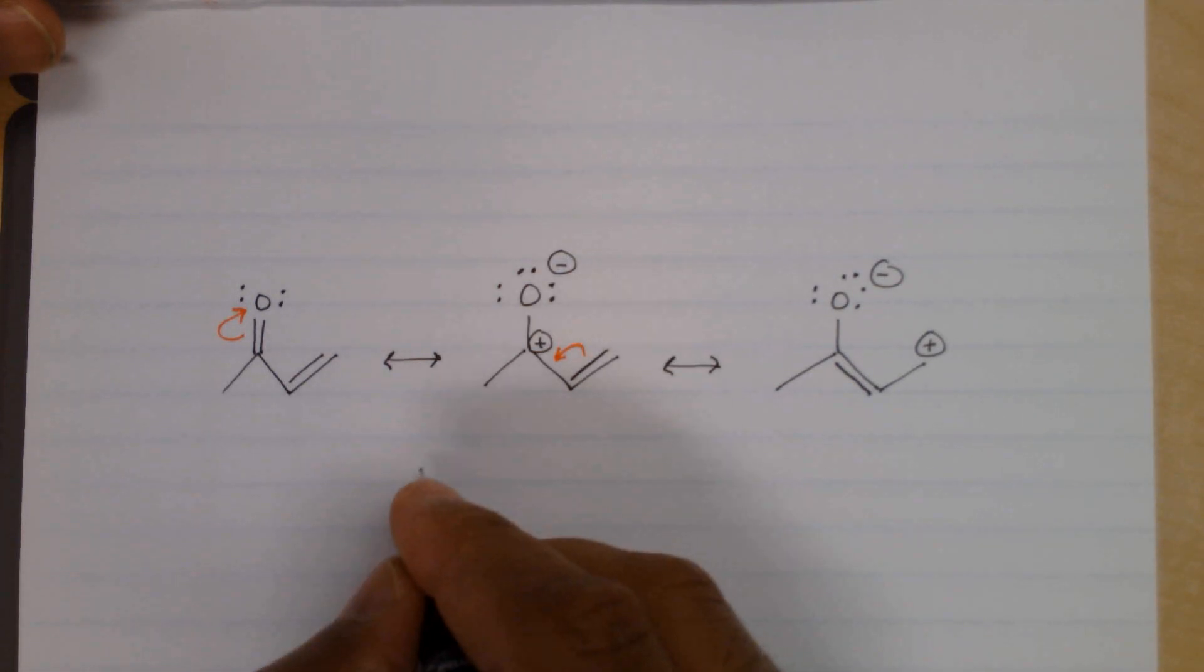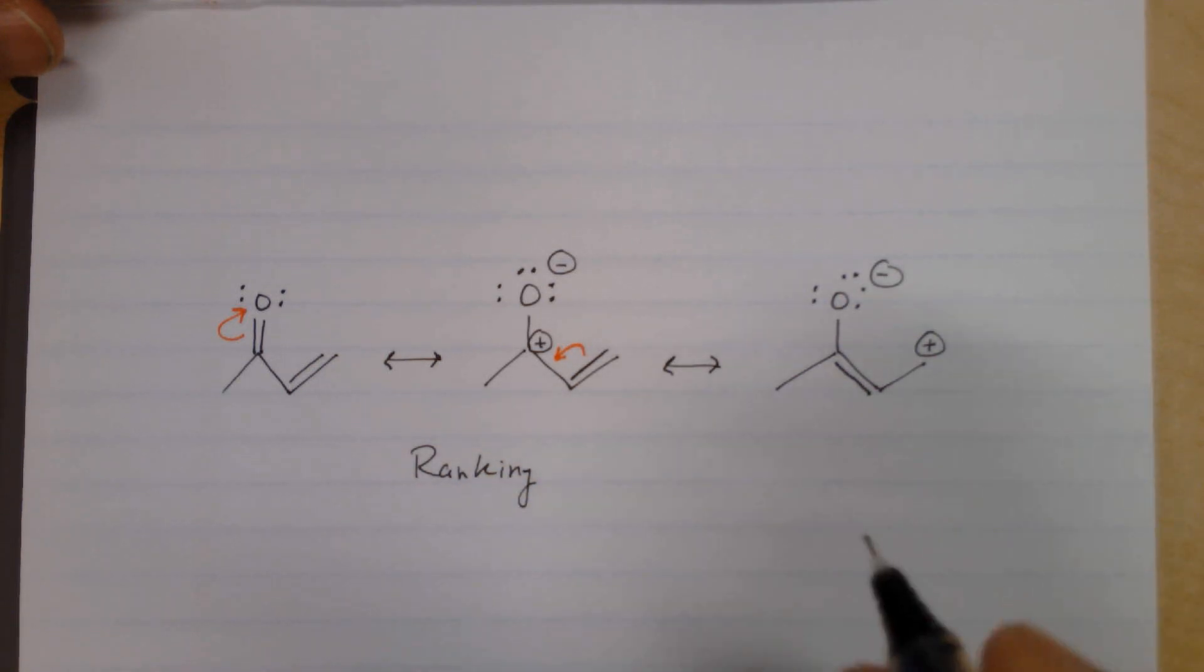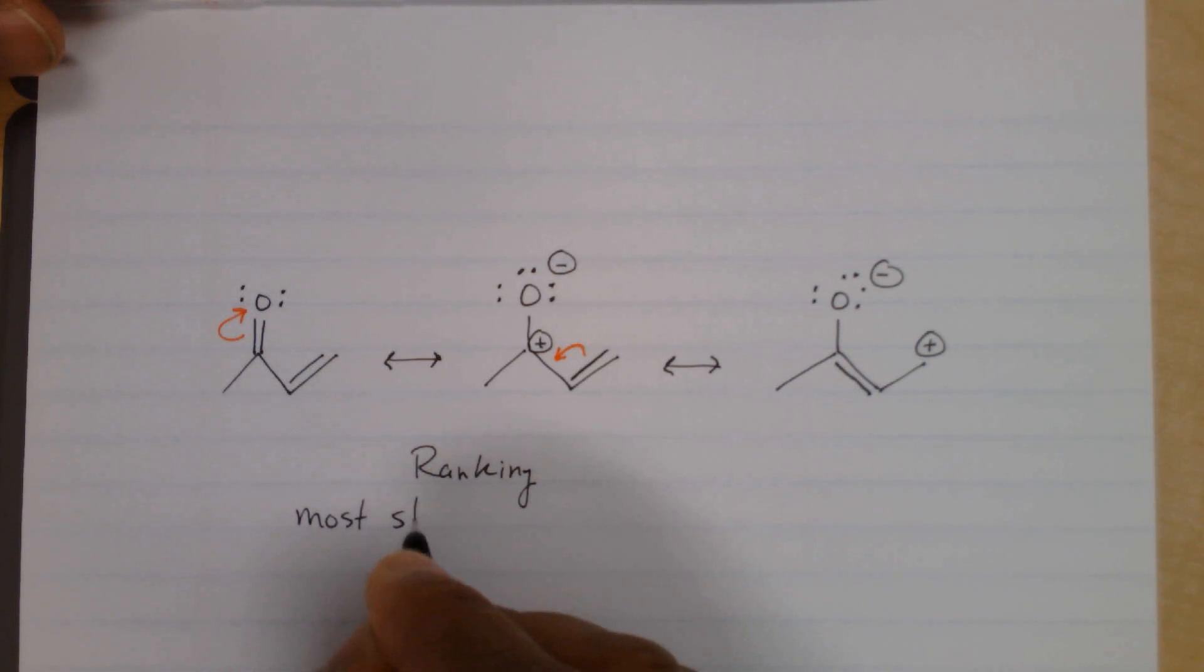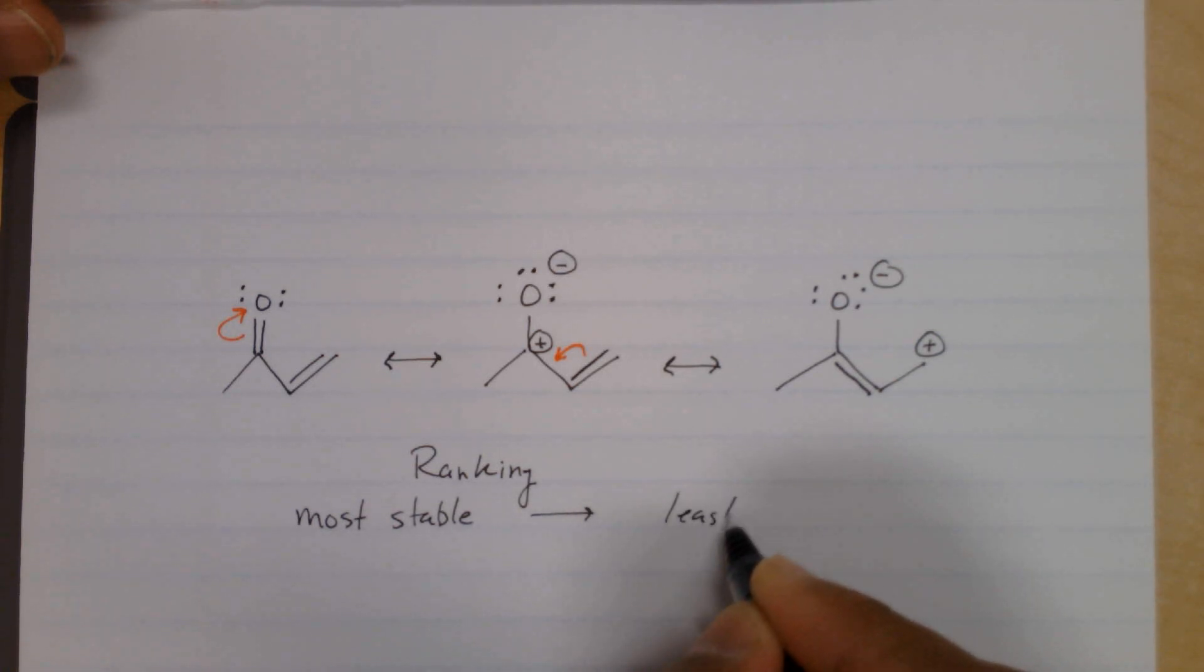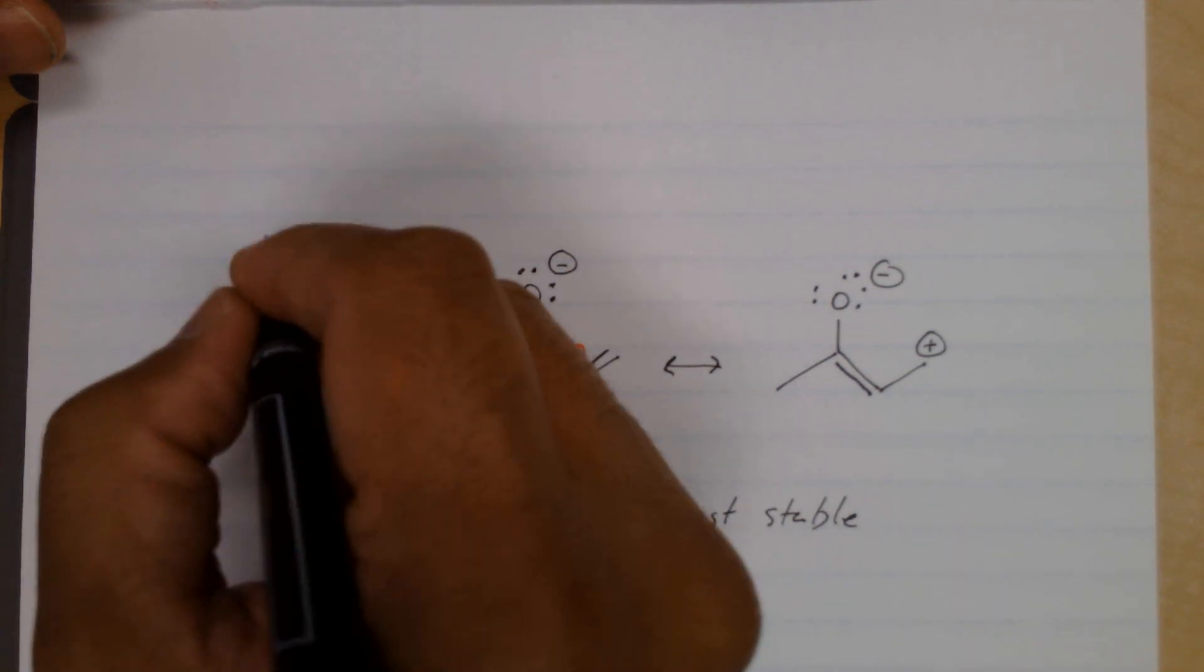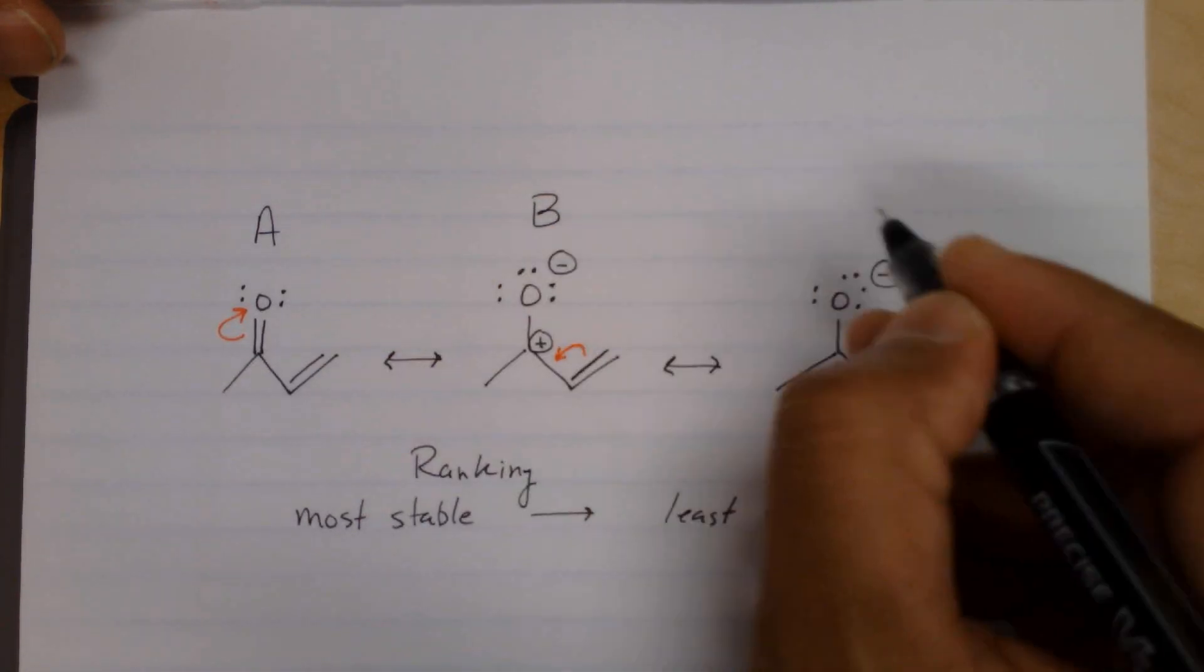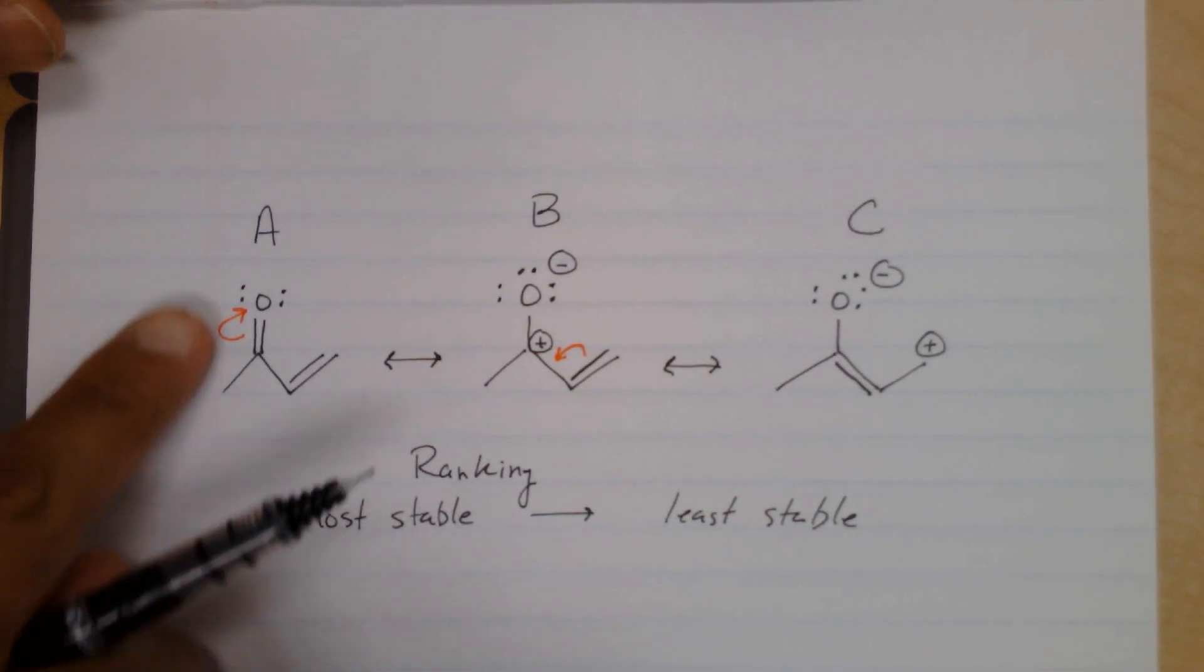If we were ranking resonance structures from most stable to least stable, we'll call this structure A, B, and C. Most stable, we'll call A. There's fewer formal charges, there's zero formal charges. So that would be the most stable. You've got two here.